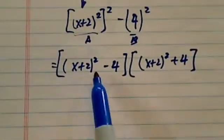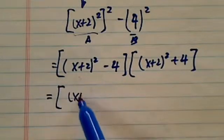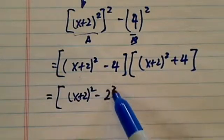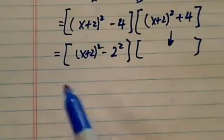Notice here we get another difference of squares again because we have x plus 2 squared minus 2 squared. This term there's nothing we can do, we'll just copy it here. Let's keep on going.